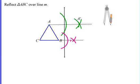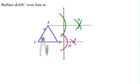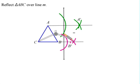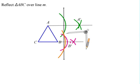So this is my location of B'. And the last step — we're going to do this for point C. So place your compass on point C and create an arc that intersects the line of reflection in two points.